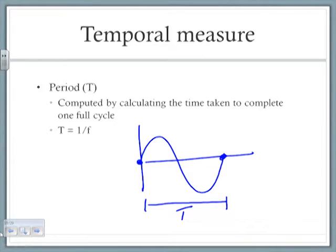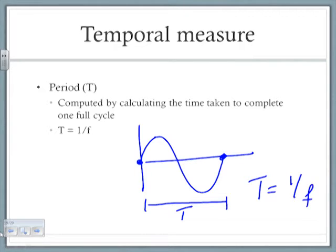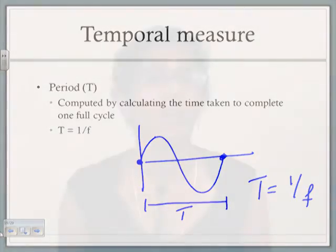Now since we have understood the cycle, we're going to talk about period. Period is the time taken to complete one full cycle. So the time taken to complete from this point of rest to this point is going to be defined as the period. Period is depicted by the symbol T.